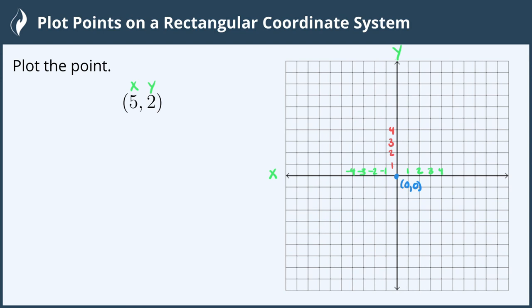And below the origin it's negative. So it's negative 1, negative 2, negative 3, negative 4 and so on. Our point is positive 5, positive 2.